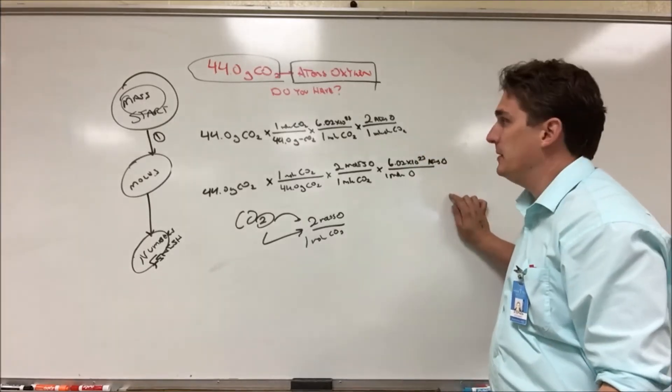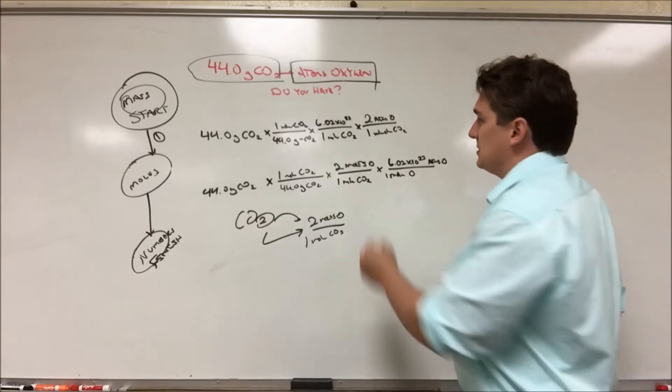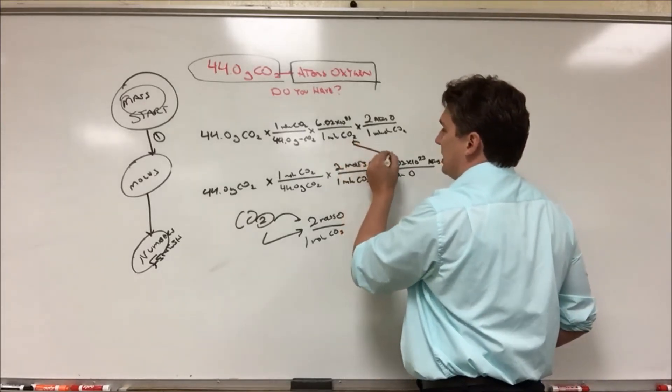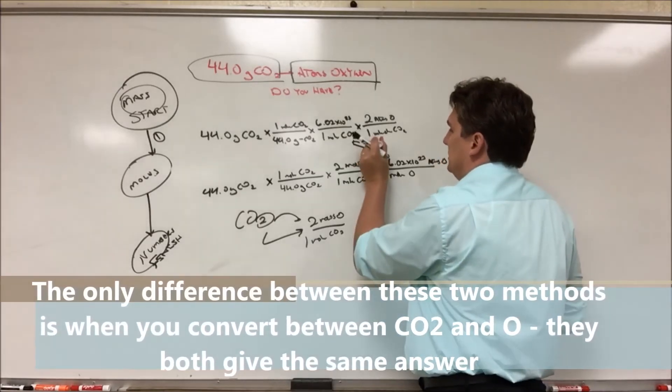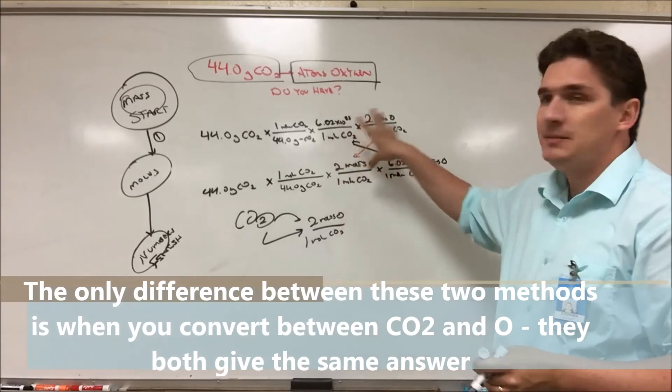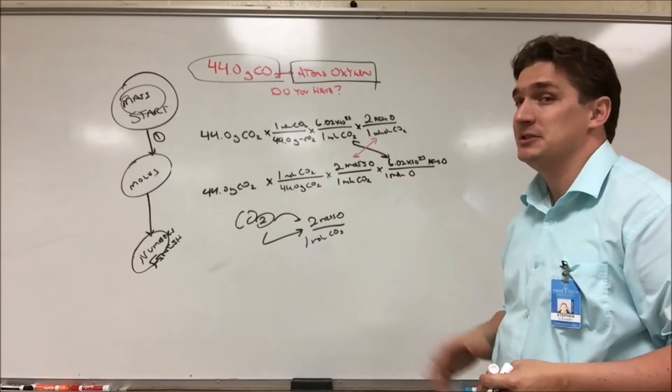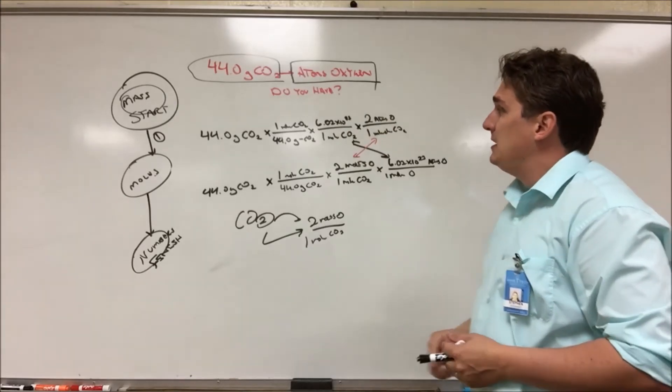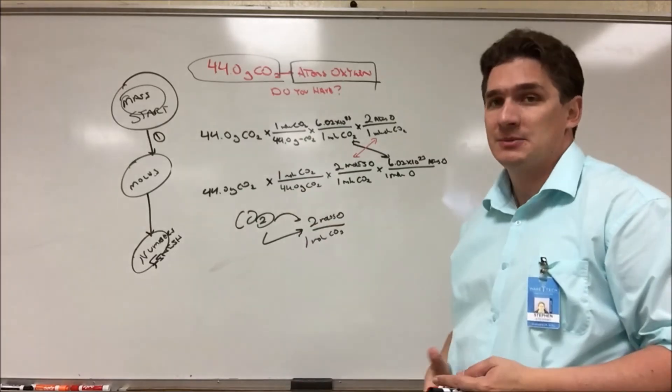And this will give us the same finishing point. The only thing that happens between these two methods is swapping when you multiply by Avogadro's number and swapping when you convert between oxygen and CO2. So either method should give you the same result. The only thing that you're changing basically is order of operations in some units. At the end of the day though, you're going to end up with 1.2 times 10 to 24 atoms of oxygen.